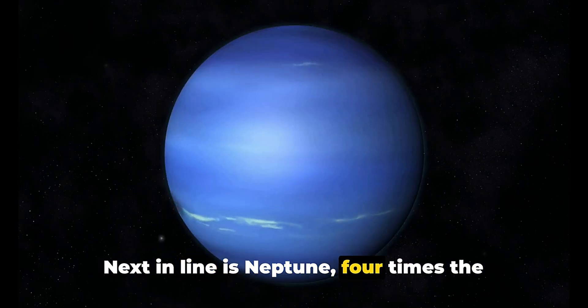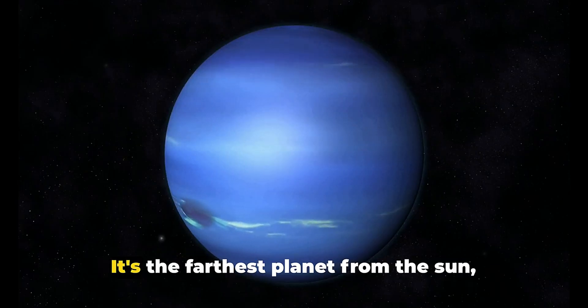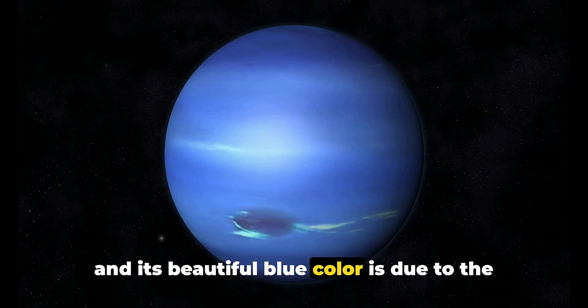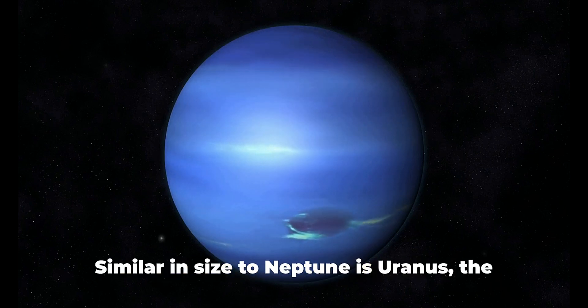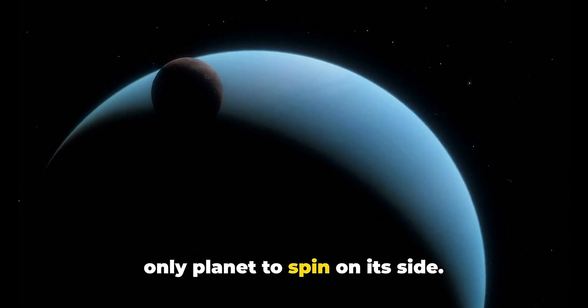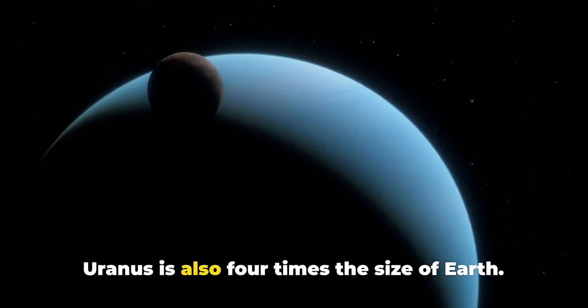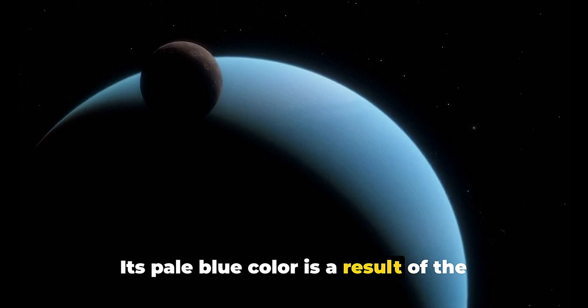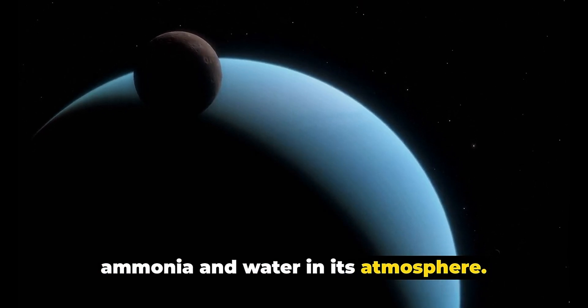Next in line is Neptune, four times the size of Earth. It's the farthest planet from the Sun and its beautiful blue color is due to the methane in its atmosphere. Similar in size to Neptune is Uranus, the only planet to spin on its side, also four times the size of Earth.